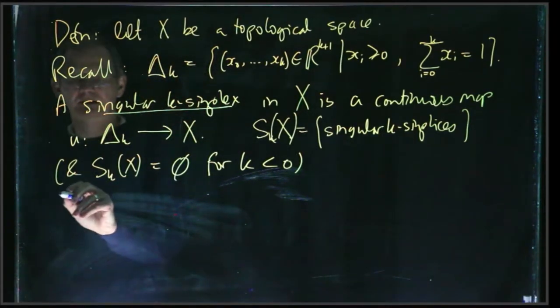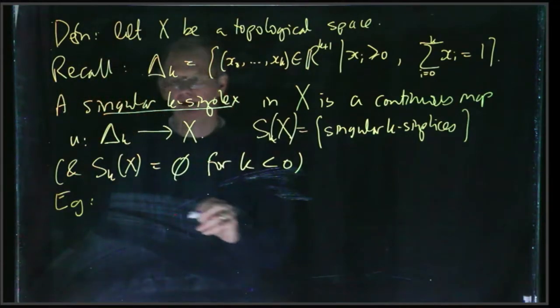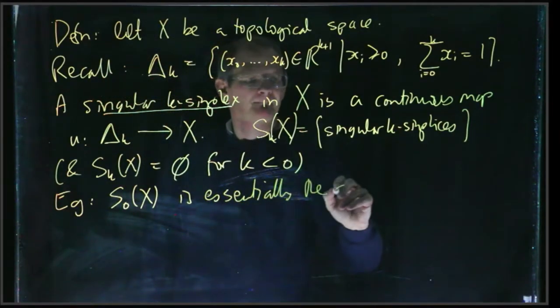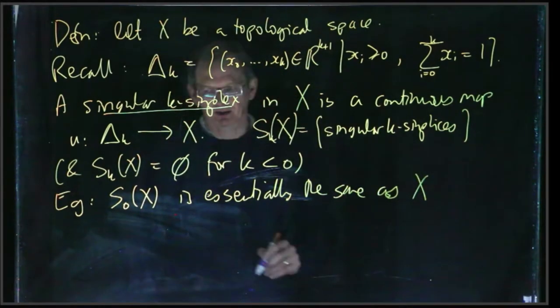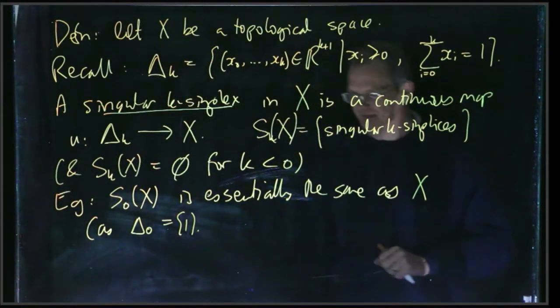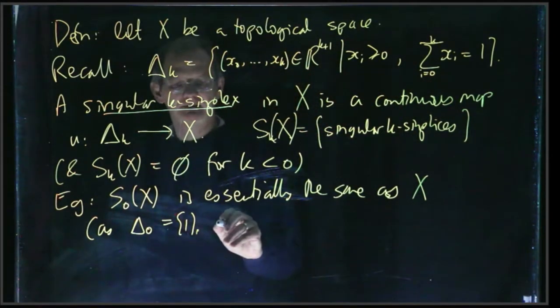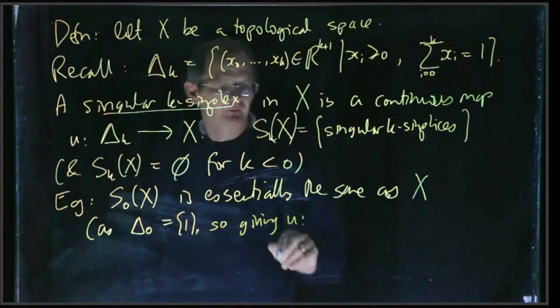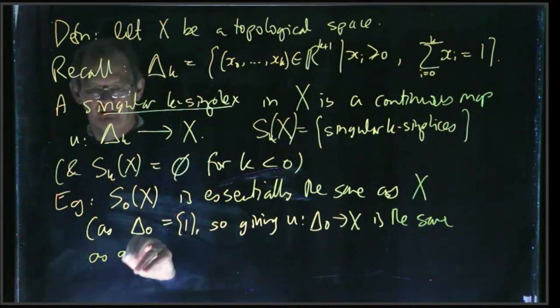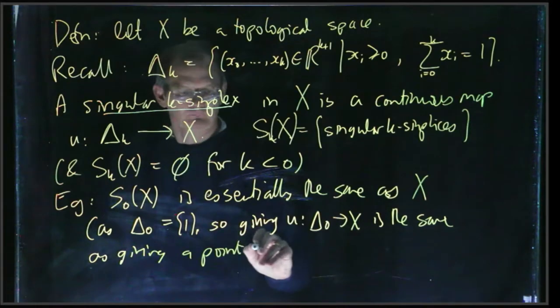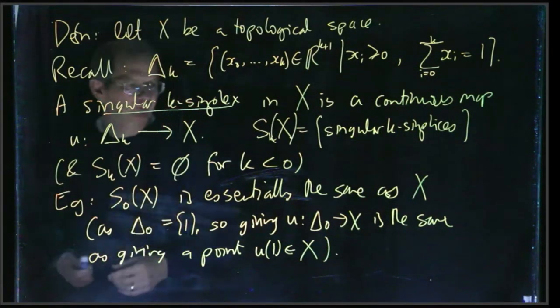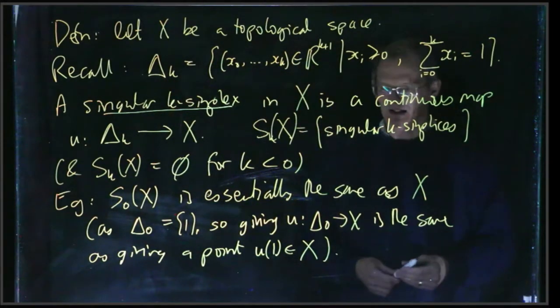And so what does this mean? So what's S₀(X)? Well, that's just because Δ₀ is a single point - it just consists of the number 1. So to give a continuous map from Δ₀ to X, it's just the same as to give a point of X.